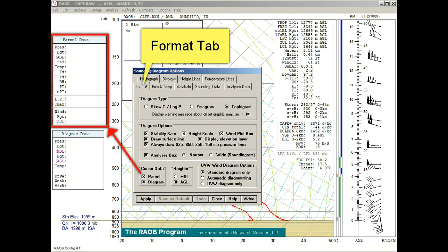The cursor data section provides two options. The parcel option displays values for the data points along the sounding profile, while the diagram option continually reflects values of the mouse cursor over the diagram.